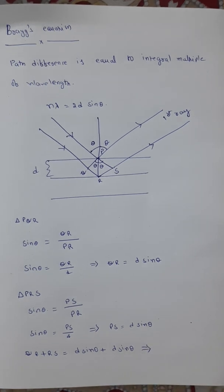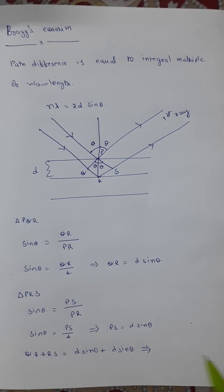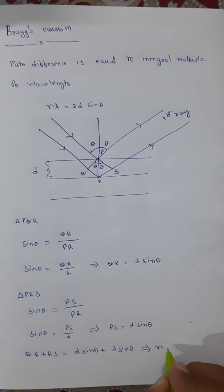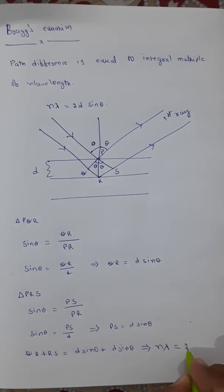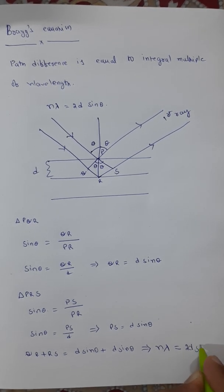According to Bragg's equation, path difference is equal to integral multiple of wavelength. Therefore, I can write n lambda equal to d sin theta plus d sin theta, that is 2d sin theta.